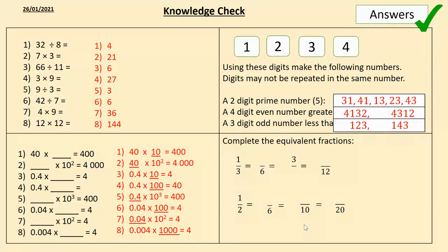Multiples of 10. Remember, 10 squared is 100, 10 cubed is 1000. And as yesterday, we are moving the digits to find the correct place values. All of those have the digit four, but we are multiplying to change the place value of the four — the value of the four.